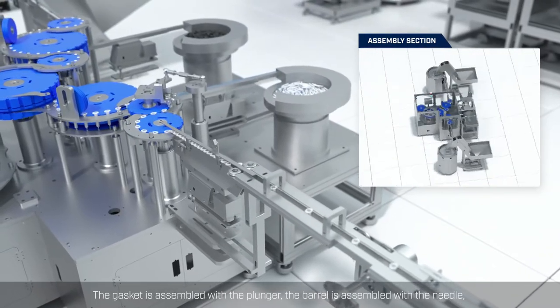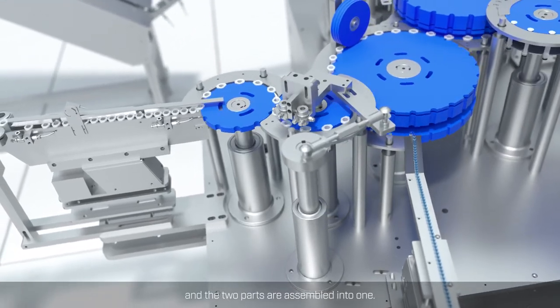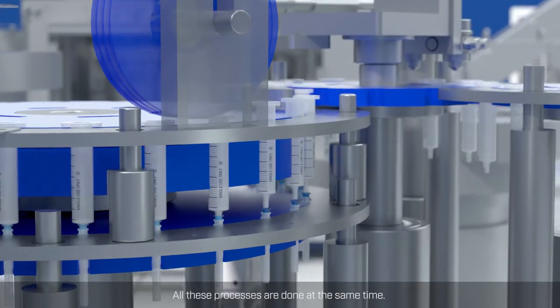The gasket is assembled with the plunger, the barrel is assembled with the needle, and the two parts are assembled into one. These processes are done at the same time.